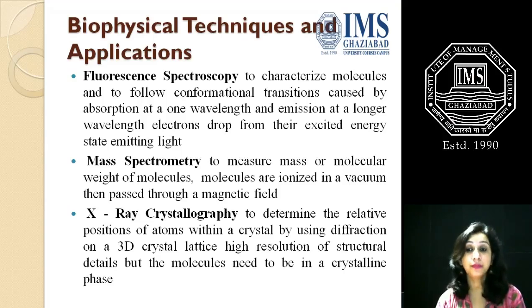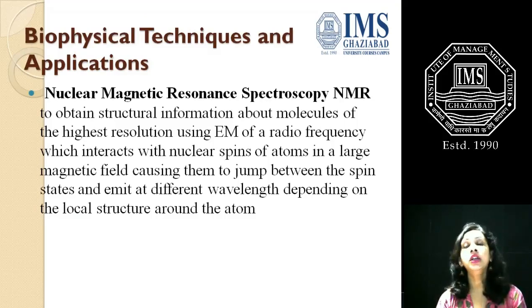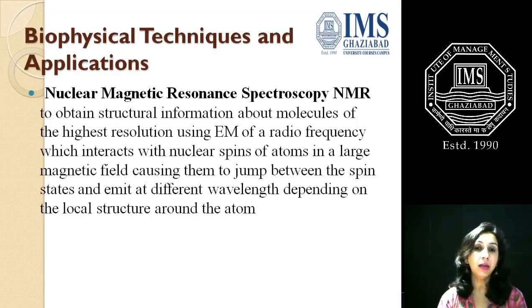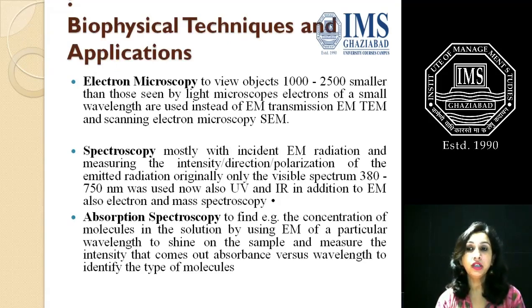X-ray crystallography is used to determine the relative positions of atoms — how they are arranged — and was used to identify the structure of DNA and genetic material. NMR is used to obtain high-resolution structural information about molecules using electromagnetic radiation of radio frequency, which interacts with the nuclear spin of atoms in a large magnetic field, causing them to jump between spin states and emit a different wavelength depending on the local structure around the atom. Electron microscopy is used to view very small objects that cannot be seen with a light microscope.